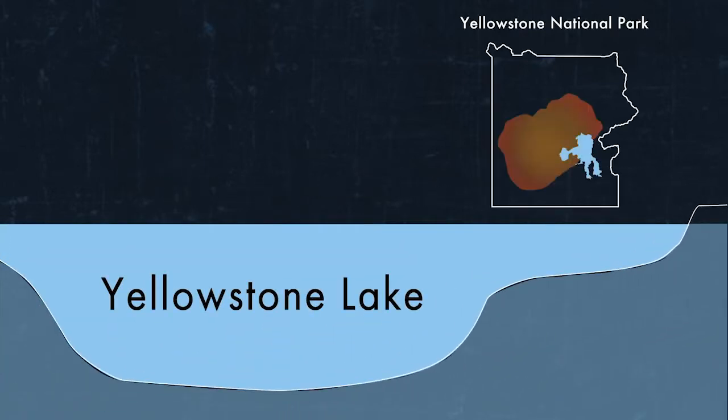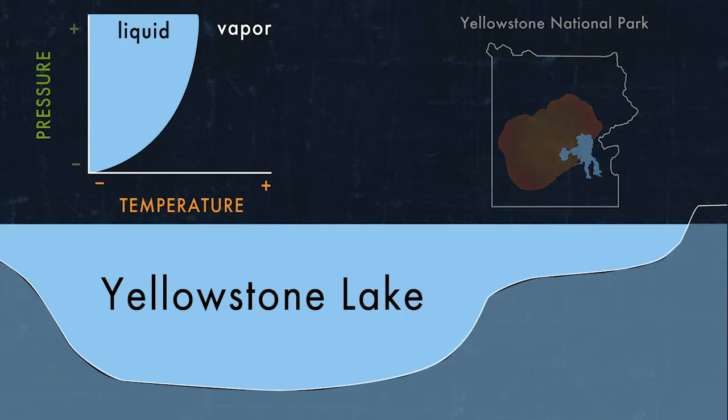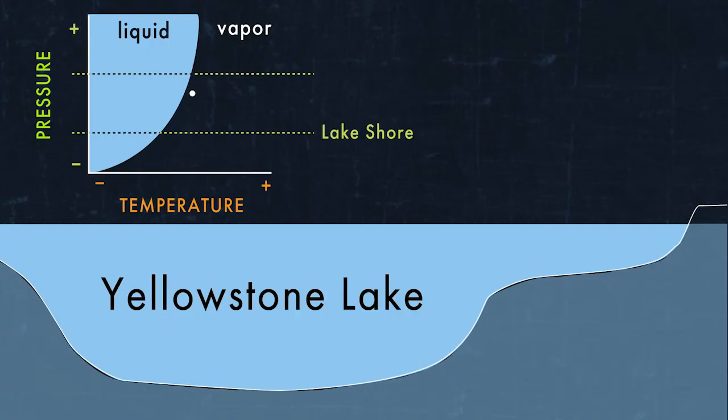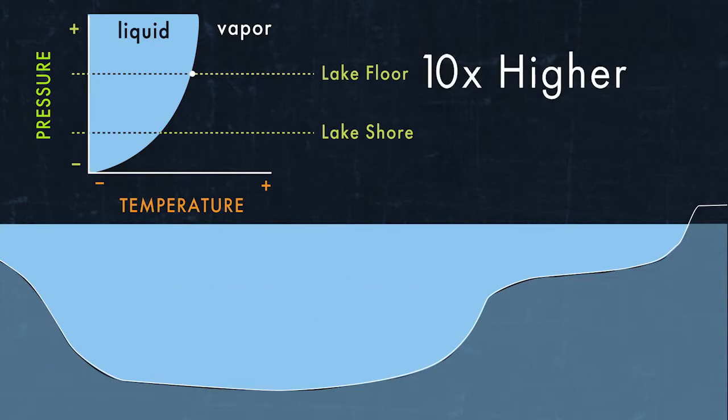Yellowstone Lake is more than 350 feet deep, and the pressure at the bottom of the lake is more than 10 times greater than the atmospheric pressure on land.